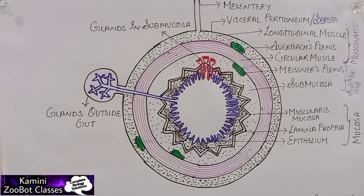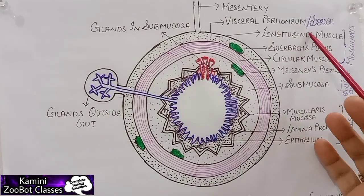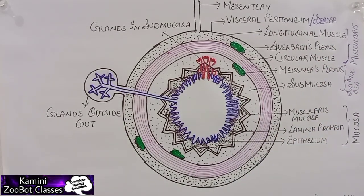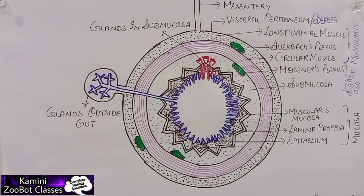The second type is serosa, which is the same as the adventitia layer but covered by a visceral peritoneum. It is present inside the stomach — these are called intraperitoneal organs, and the stomach is one example.